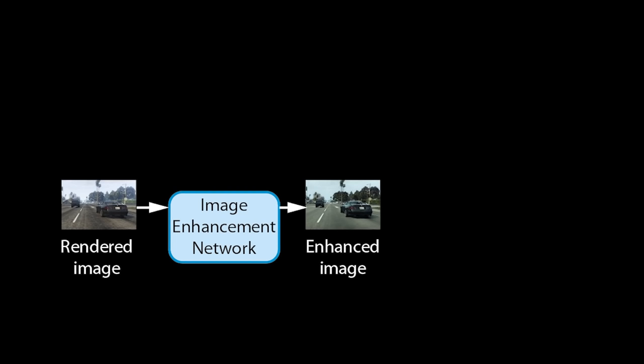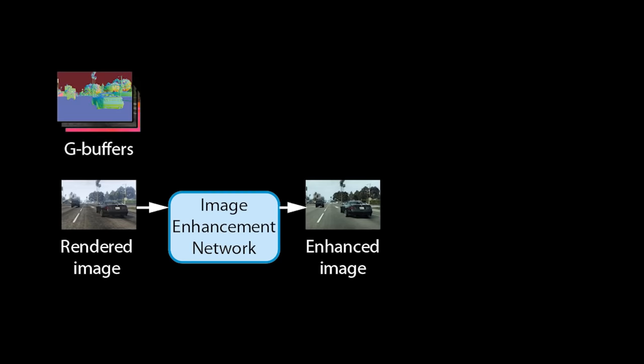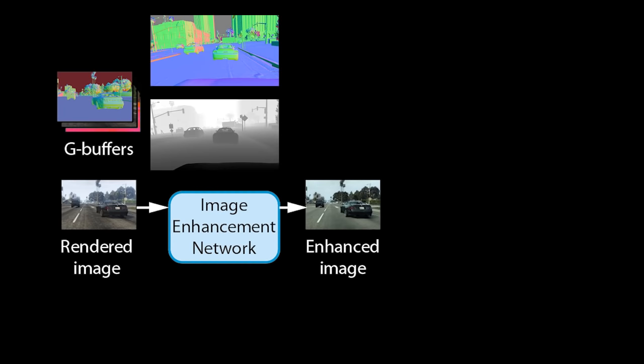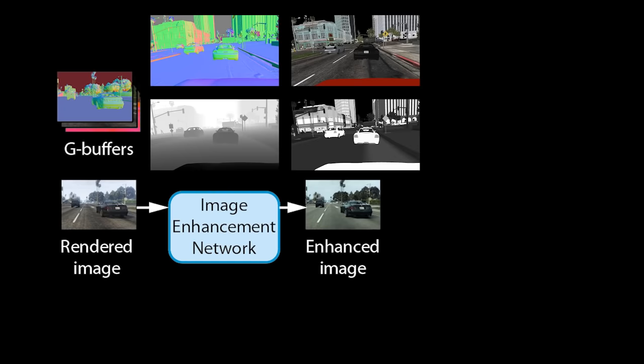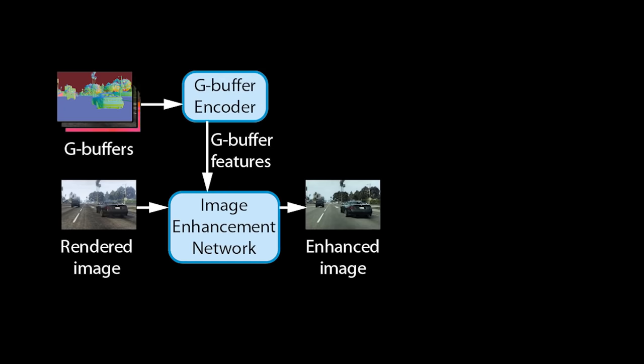Our method takes a rendered image from the game and passes it through an image enhancement network to produce an enhanced image. We further extract a set of rendering buffers, called G-buffers, produced by the game engine. G-buffers contain geometric information such as surface normals or distance to the camera, material information such as albedo or glossiness, and may also contain information about the lighting in a scene. We pass the buffers through a G-buffer encoder network to produce feature tensors at multiple scales, which encode information about the rendered scene.